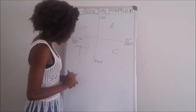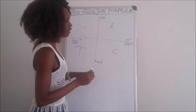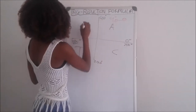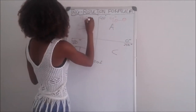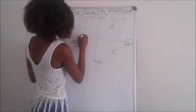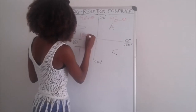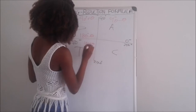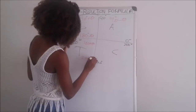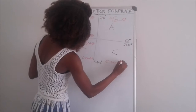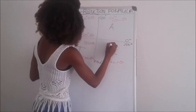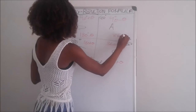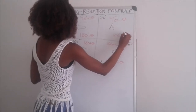In the first quadrant we have 90 degrees minus theta. In the second quadrant we have 90 degrees plus theta and also 180 minus theta. In the third quadrant we have 180 plus theta and 270 minus theta. In the fourth quadrant we have 270 plus theta, 360 minus theta, and in the first quadrant again we have 360 plus theta.